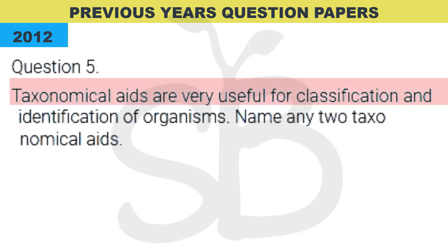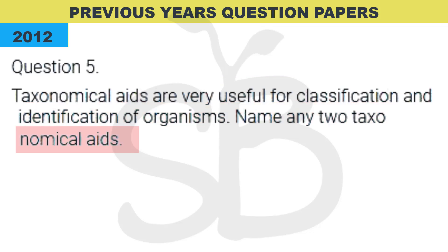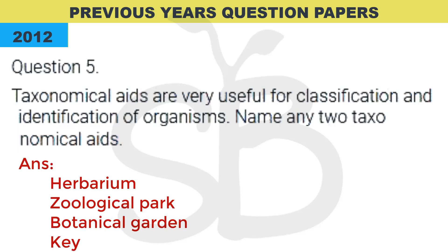From the 2012 exam: 'Taxonomical aids are very useful for classification and identification of organisms. Name any two taxonomical aids.' Examples of taxonomical aids include Herbarium, Botanical Garden, Zoological Park, Key, and Museum — any two of these are acceptable answers.